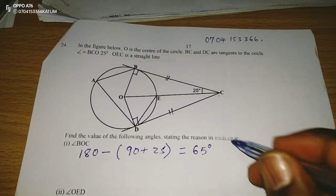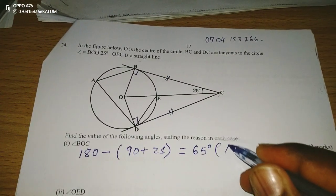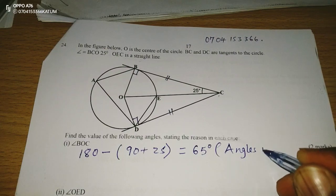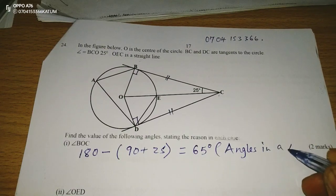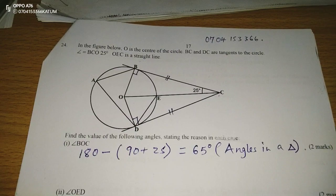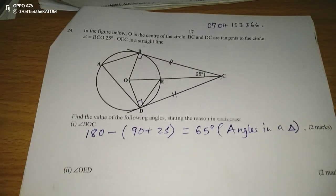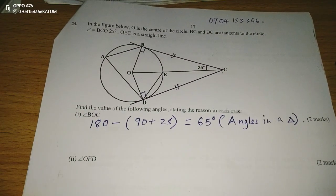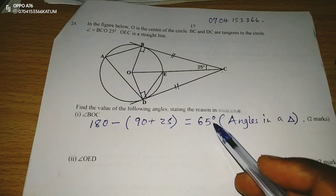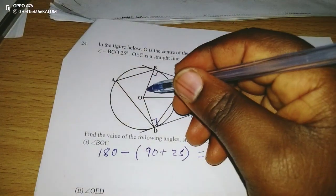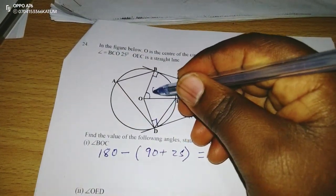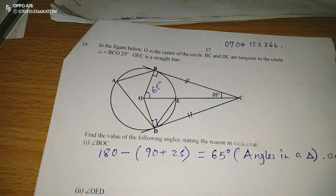The reason behind is angles in a triangle should give us 180. So the value of this one is 65. The angle at this point is 65.